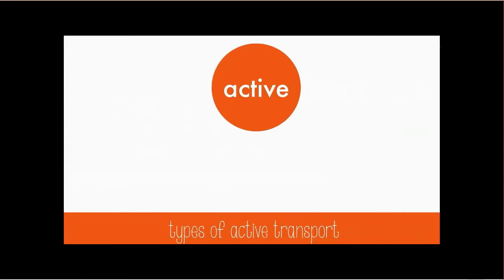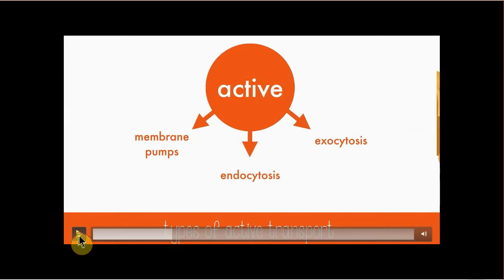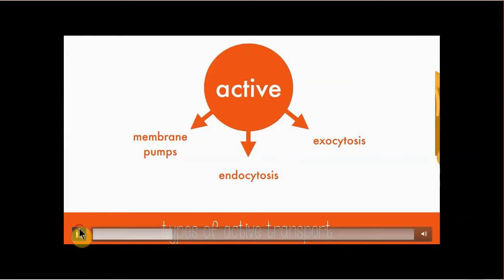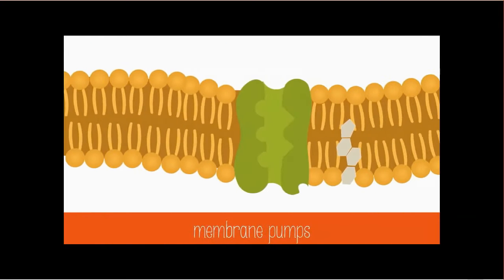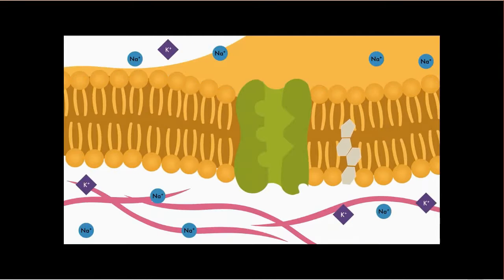There are three types of active transport: membrane pumps, endocytosis, and exocytosis. Let's look at membrane pumps first. So the membrane pumps are what I call the receptor mediated ones in our notes. Same thing. Membrane pumps are just carrier proteins that move substances from areas of low concentration to areas of high concentration.